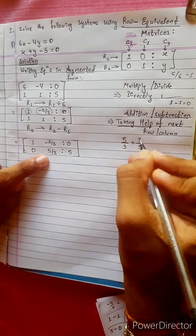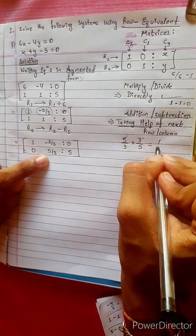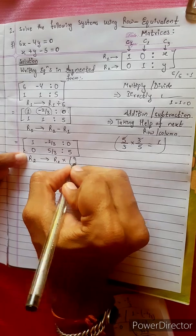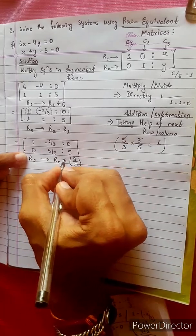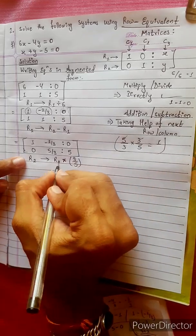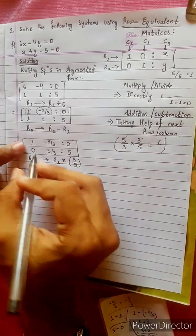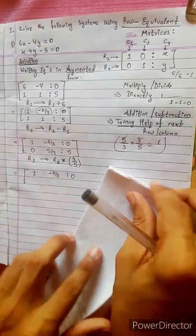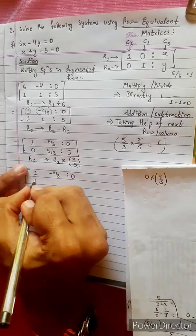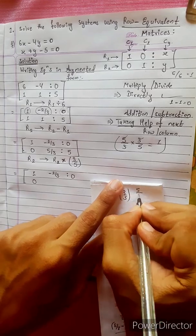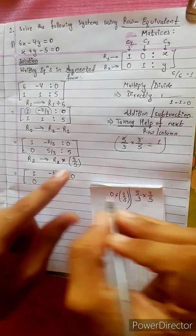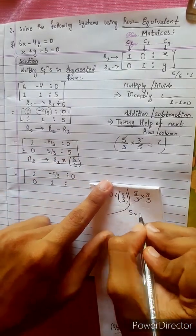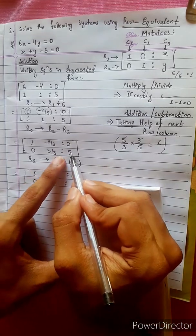We get 5/3 in R2. R2 now changes into R2 multiplied by 3/5. This multiplication: 0 times 3/5 stays 0; 5/3 times 3/5 — the 5 and 3 cancel — gives 1.